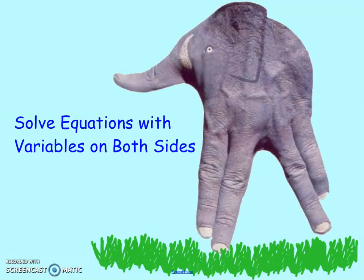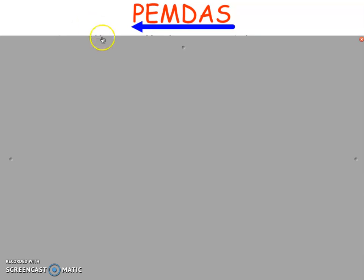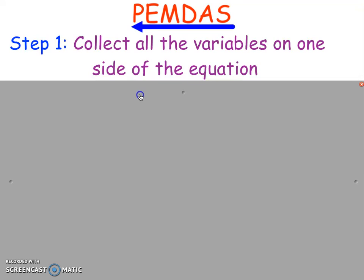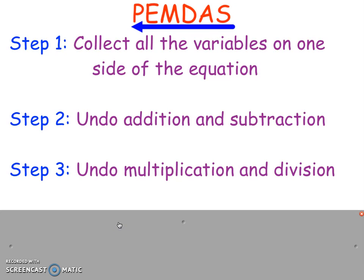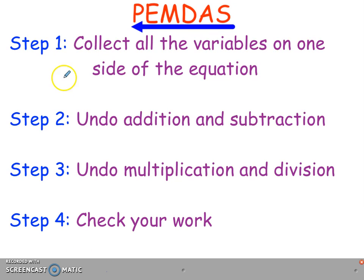Solving equations with variables on both sides. For this video, we start out with a picture of a hand that looks like an elephant. We're still doing our reverse PEMDAS. This time, we need to first collect all the variables on one side of the equation. The remainder of our steps stay the same. Undo any addition and subtraction, undo multiplication and division, and check your work.